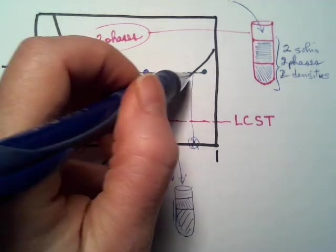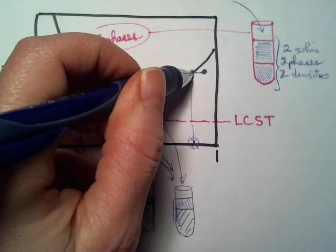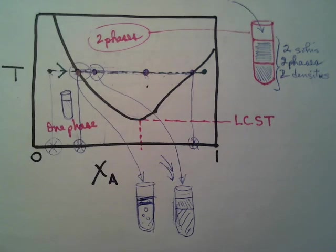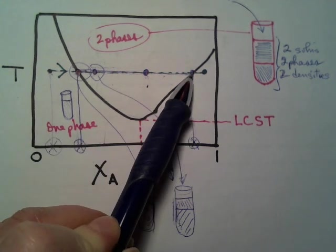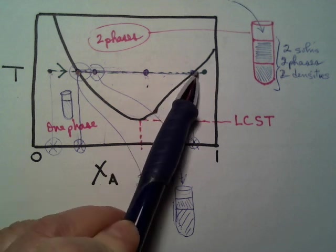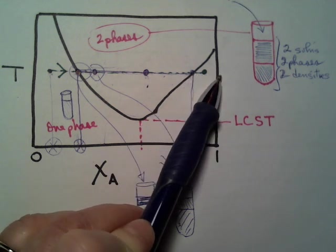When I finally reach add enough A to reach this point, all of a sudden, it goes clear again. This would be so cool to do a lot. I'll have to do that next year. Then what happens? Well, I'm in the one phase. I can keep adding A. And nothing apparently is going to happen. My volume is just going to increase.